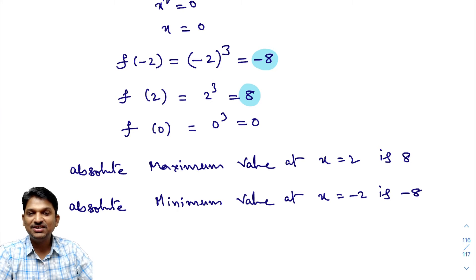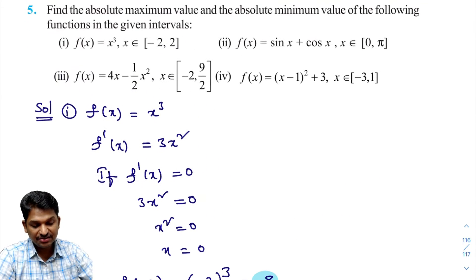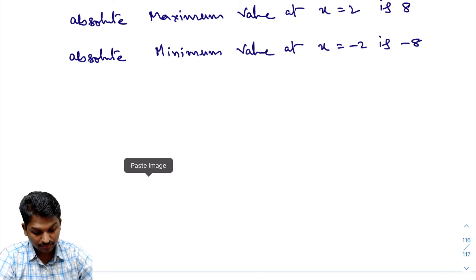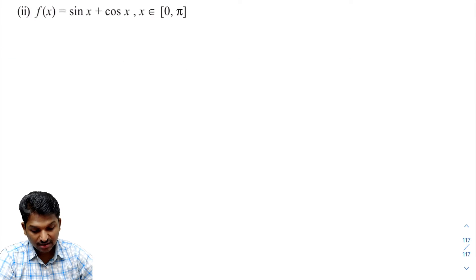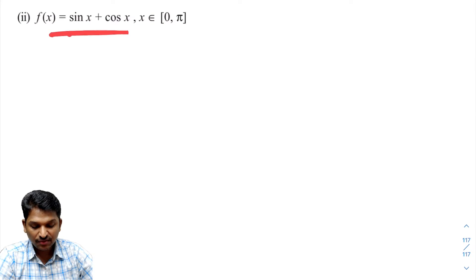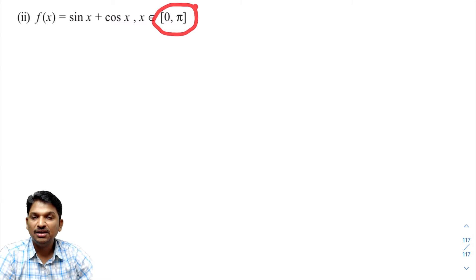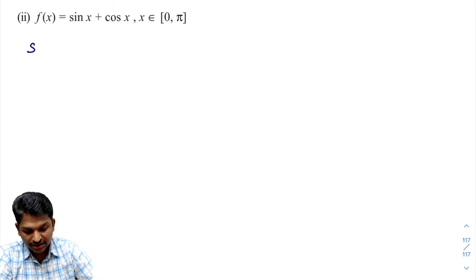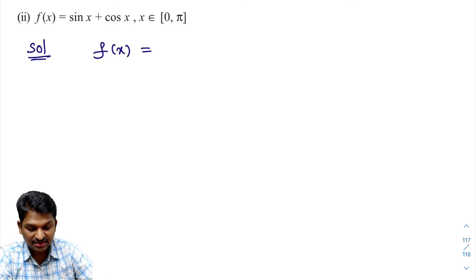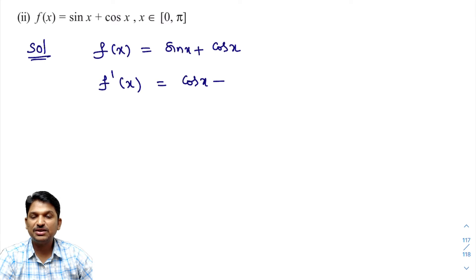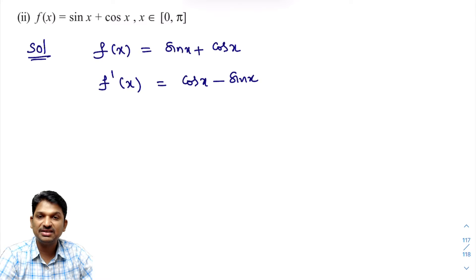Second bit: f(x) = sin x + cos x, defined on the closed interval [0, π]. Same procedure. Calculate f'(x): derivative of sin x is cos x, derivative of cos x is -sin x, so f'(x) = cos x - sin x. Setting f'(x) = 0 gives cos x - sin x = 0, which simplifies to cos x = sin x, and dividing both sides by cos x gives tan x = 1.